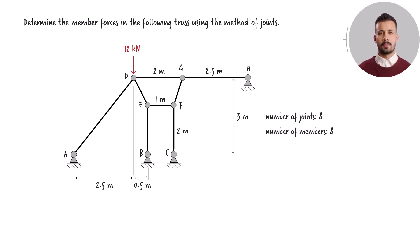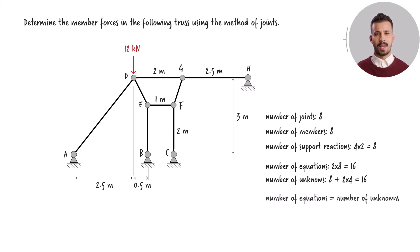The truss structure comprises eight joints, eight members, and eight support reactions. By writing two equilibrium equations for each of the eight joints, we establish 16 equilibrium equations in total. The sum of unknown forces is the combination of the eight members and eight support reactions, amounting to 16 unknown forces. Given that the number of equilibrium equations equals the number of unknown forces, we can deduce that the system is statically determinate.